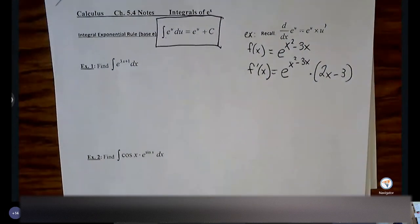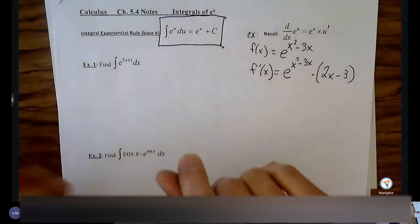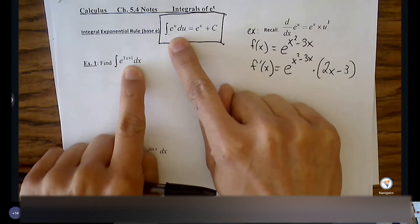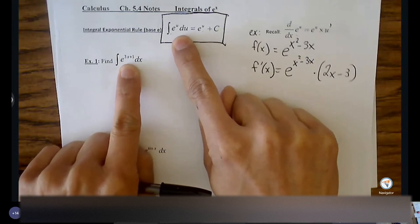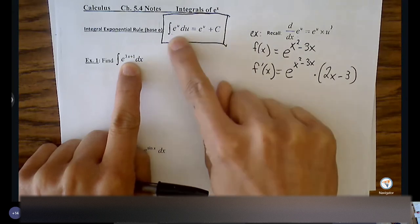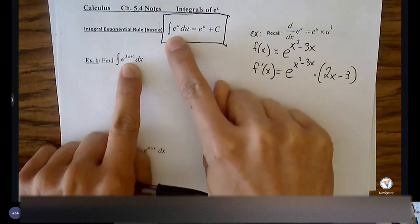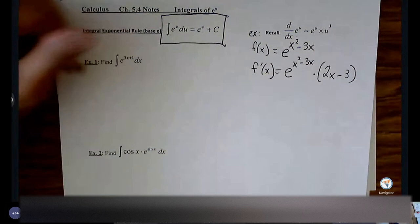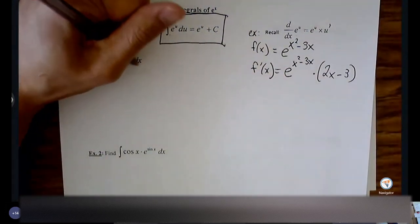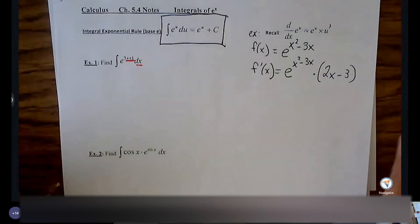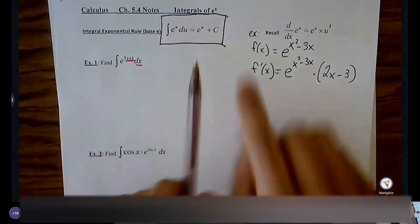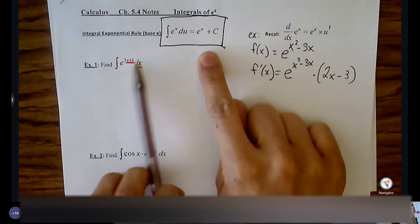Let's practice with this rule. Example one: integral of e^(3x+1). Do you see how this could potentially match the e^u rule? If we do, the u value is going to be 3x plus 1. Here's something important: if you want to use the e^u rule, you have to let the entire exponent be the u value. If you don't, you may end up with an expression that looks like the rule but is slightly off — like e^(2u) or e^(√u) — and there's no rule to use for those.